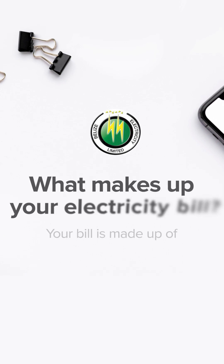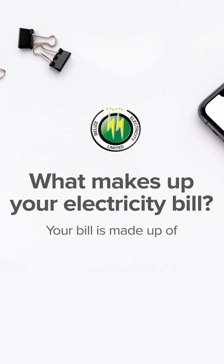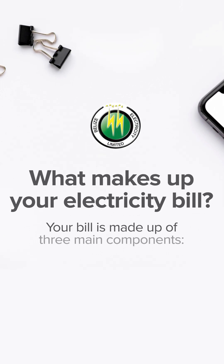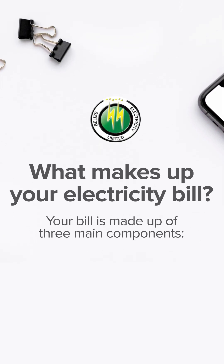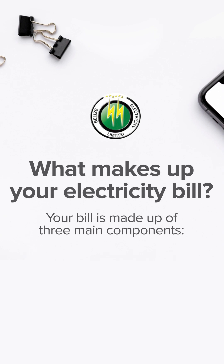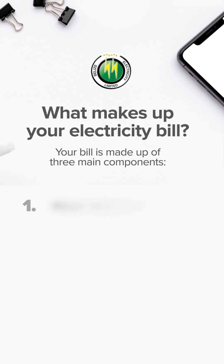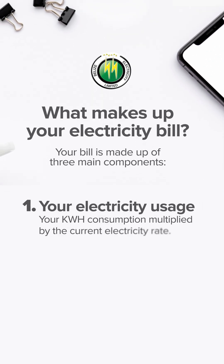Ever wonder what goes into your electricity bill? Let's break it down. Your bill is made up of three main components. One, your electricity usage — your kilowatts consumption multiplied by the current electricity rate.